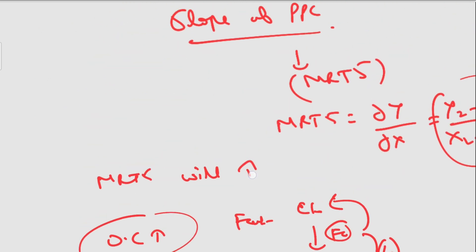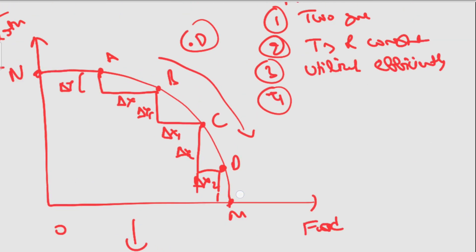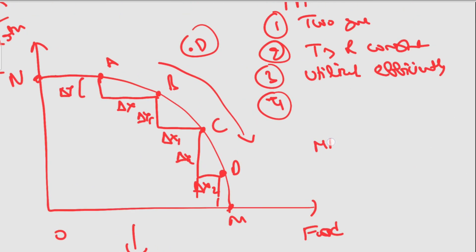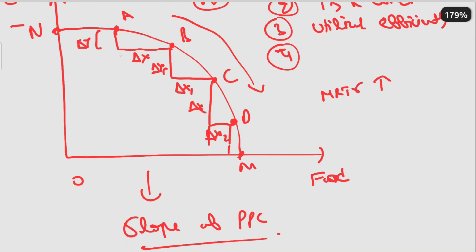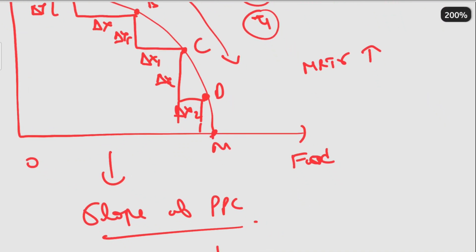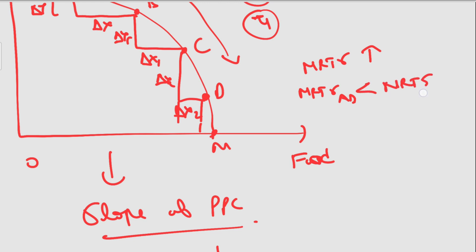This means that as we increase one additional unit of good X, the Marginal Rate of Technical Substitution is increasing. So the MRTS from A to B is less than the MRTS from B to C, which is less than the MRTS from C to D.